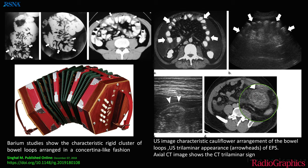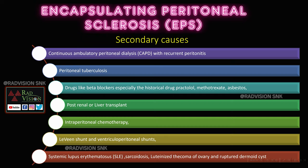This is the CT equivalent of the trilaminar appearance, in a classical case of EPS — encapsulating peritoneal sclerosis — taken from RadioGraphics.